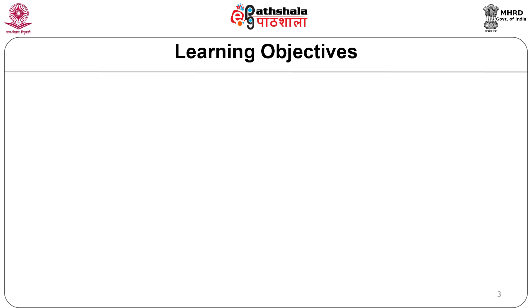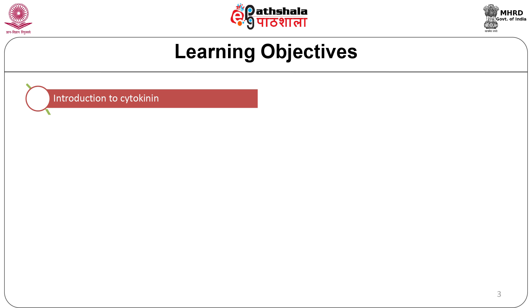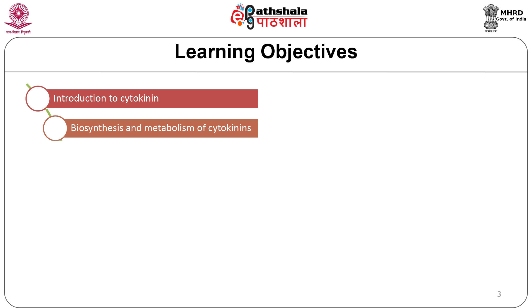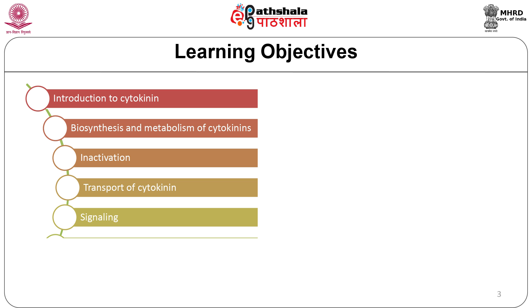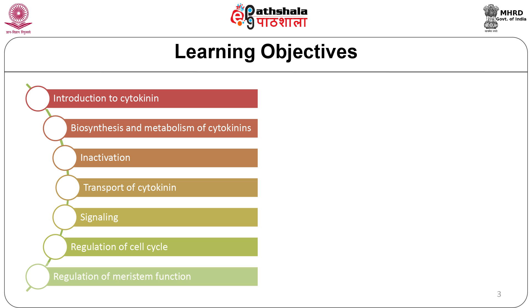The learning objectives of this module are: the structure of cytokinin, biosynthesis and metabolism, inactivation and transport of cytokinin, signaling, application of cytokinin in the regulation of cell cycle, and application of cytokinin in the regulation of meristematic activity.